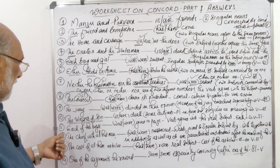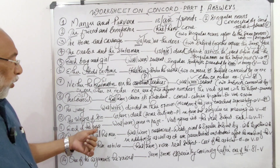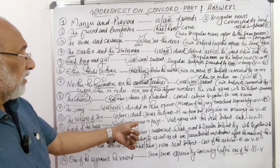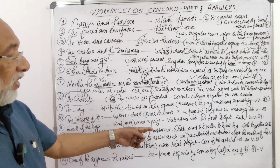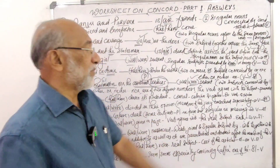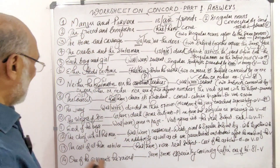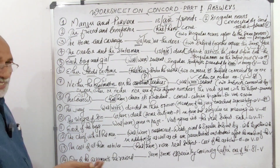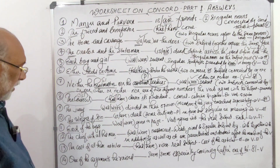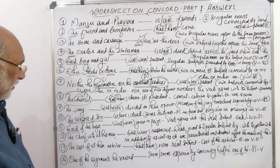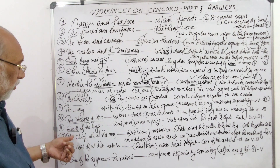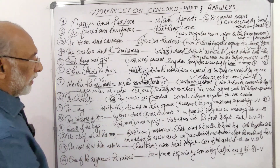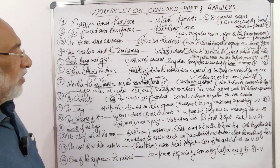Question 11: 'Each of the boys was/were given a prize.' The answer is 'was given.' The verb agrees with the real subject, which is 'each.' As established earlier, 'each,' 'each one,' and 'anyone' all take a singular verb. So 'each of the boys was given a prize' — verb agrees with the real subject 'each,' which is singular.